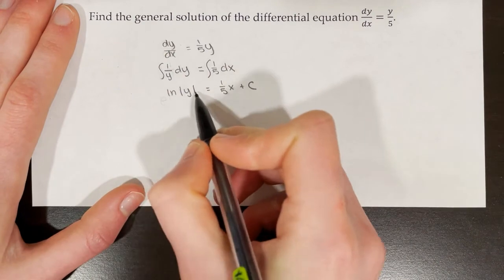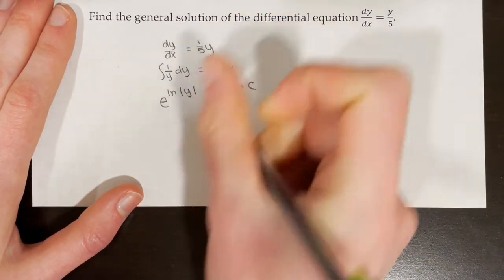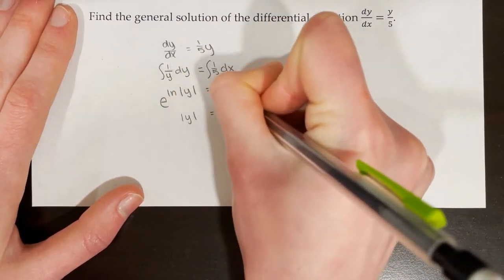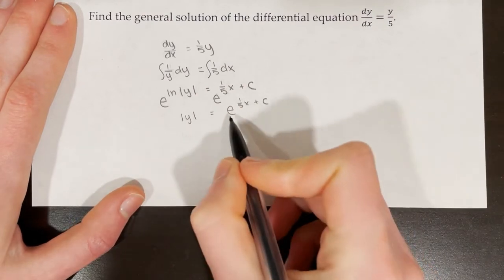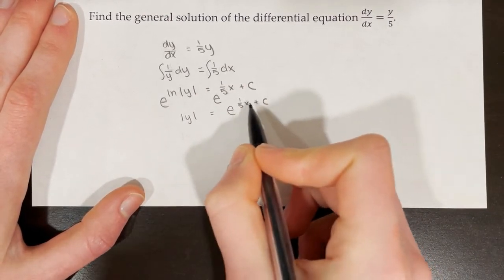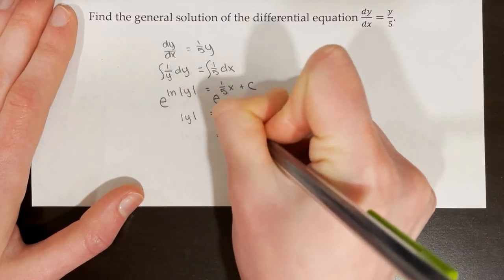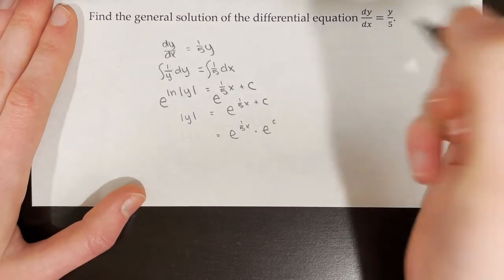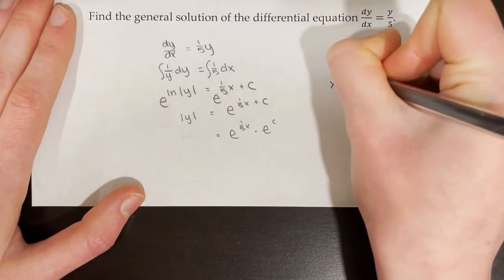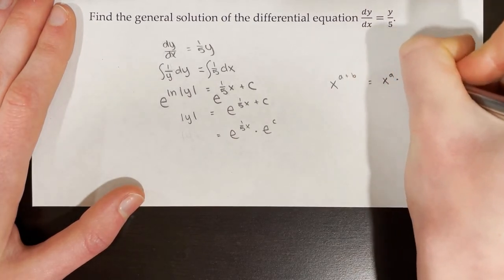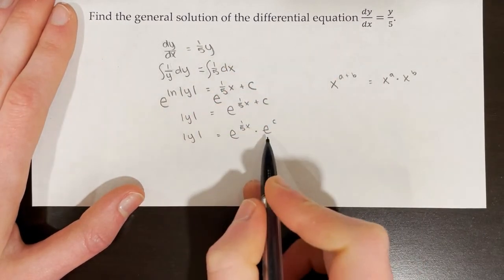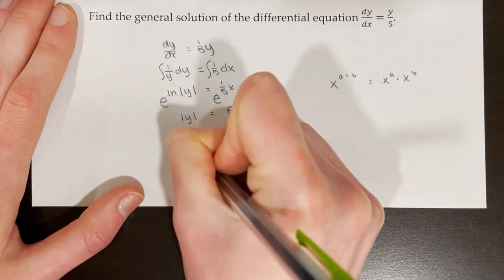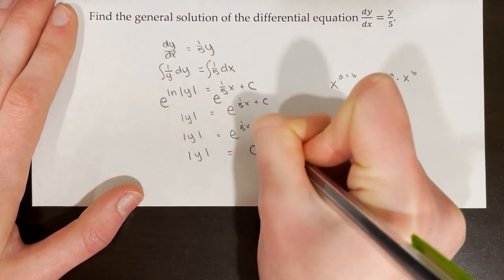Now work to isolate y. To get rid of the natural log, raise e to both sides: e^(ln|y|) simplifies to |y|, which equals e^((1/5)x + c). Splitting using exponent properties: |y| = e^((1/5)x) · e^c. Since e to the power of a constant is still a constant, we get |y| = c·e^((1/5)x).